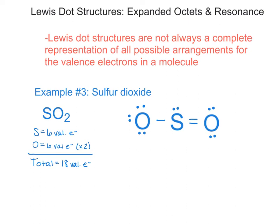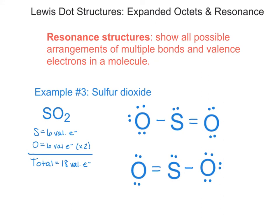In this diagram, sulfur is doubly bonded to the right oxygen. But why would sulfur be doubly bonded to the right oxygen and not the left oxygen? This is where resonance structures come in, because sulfur won't always be doubly bonded to the right oxygen — it may sometimes be doubly bonded to the left oxygen. When I have a molecule in which I can have multiple arrangements of my bonds, I need to draw what are called resonance structures, showing all possible arrangements for the multiple bonds and valence electrons in a molecule.